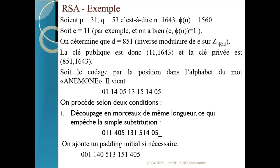À partir de l'algorithme d'Euclide étendu, vous pouvez calculer l'inverse de E modulo phi(N). Je suppose que vous connaissez le procédé d'Euclide étendu, ce qui vous permettra de réaliser l'opération pour avoir l'inverse de E. À partir de cet instant, vous possédez les deux clés : la clé publique E et N, et la clé privée D.